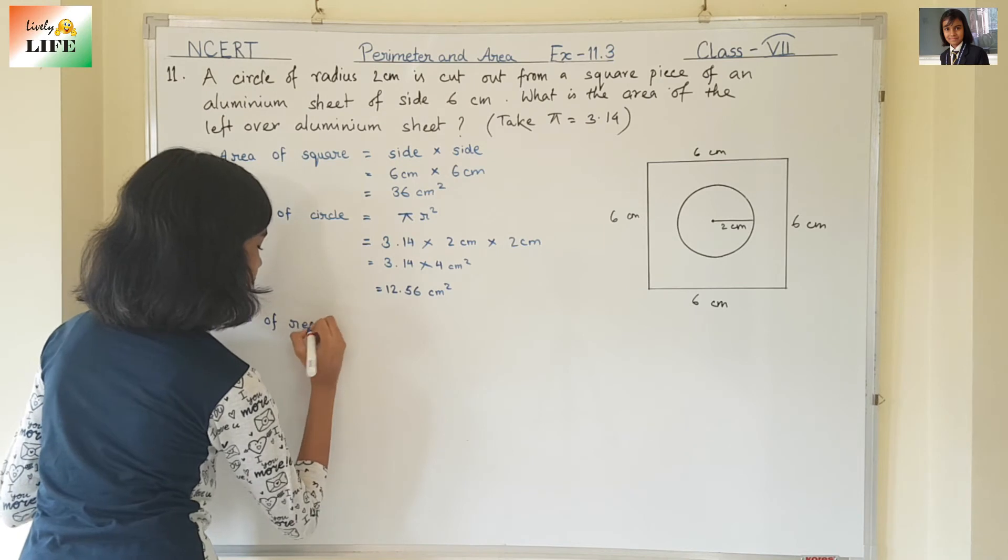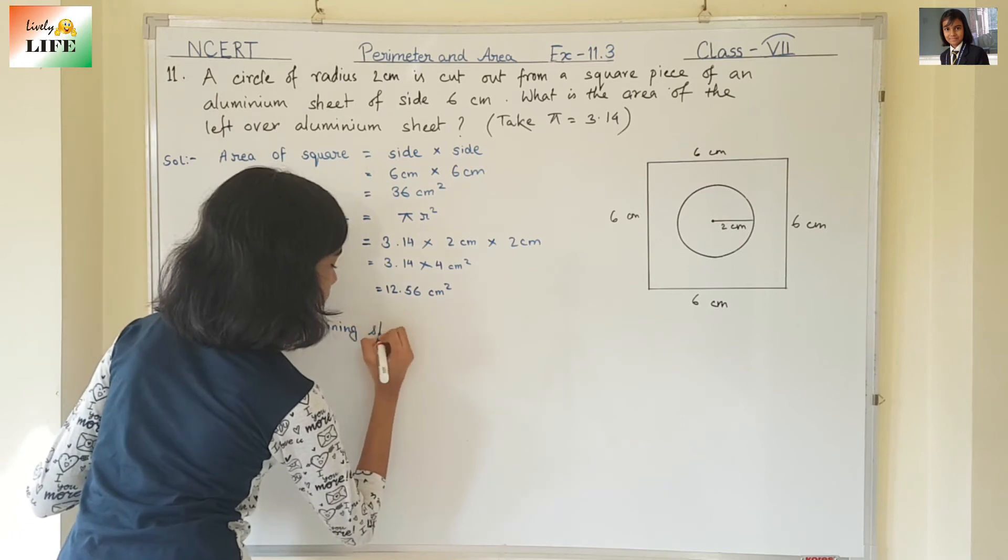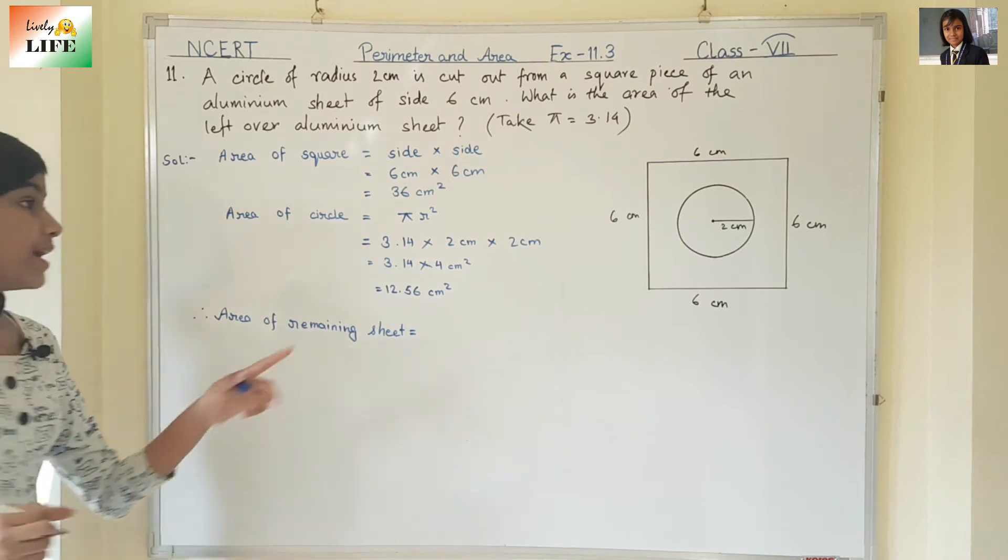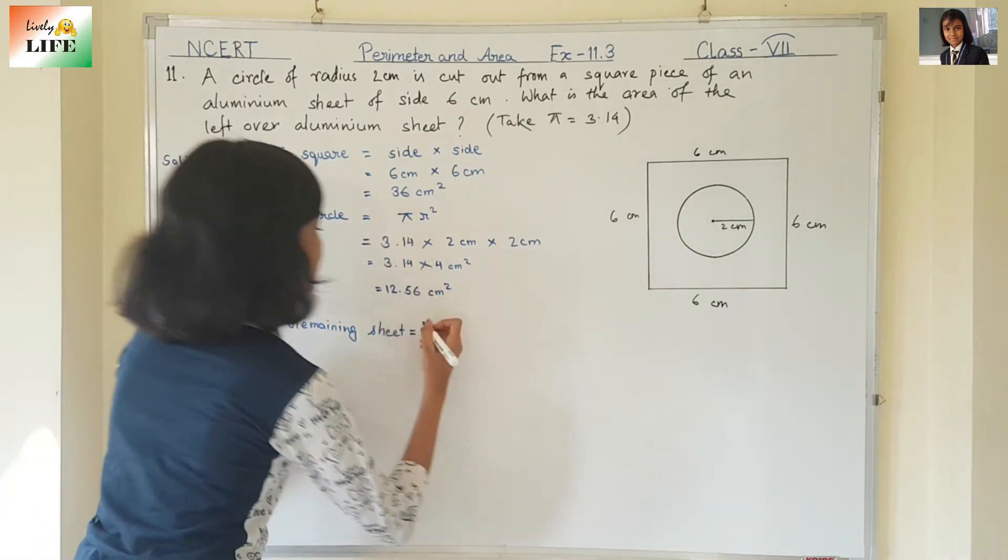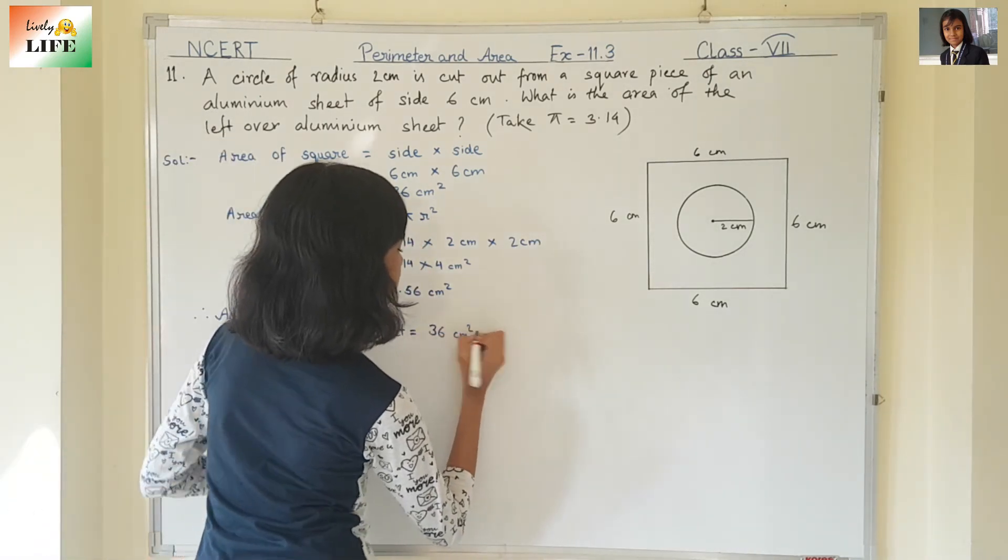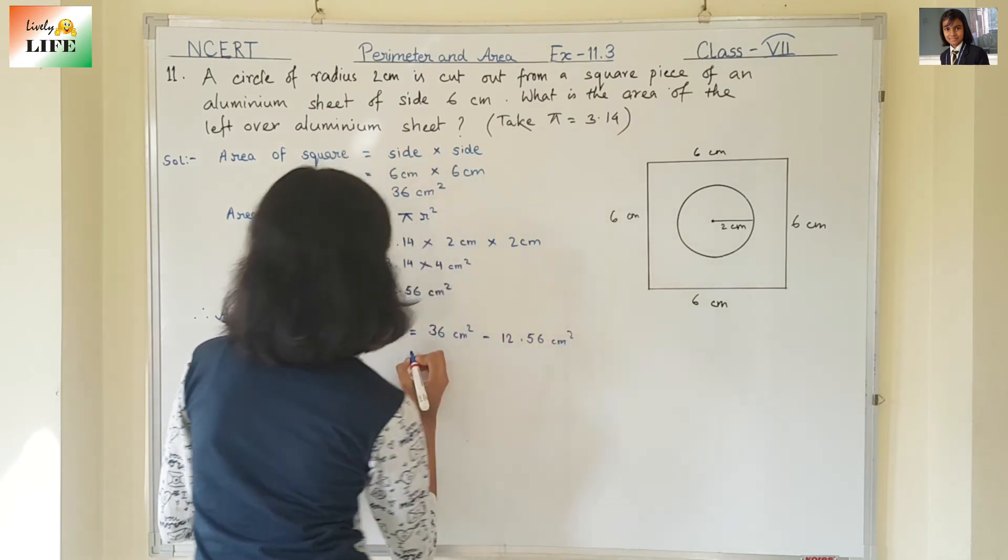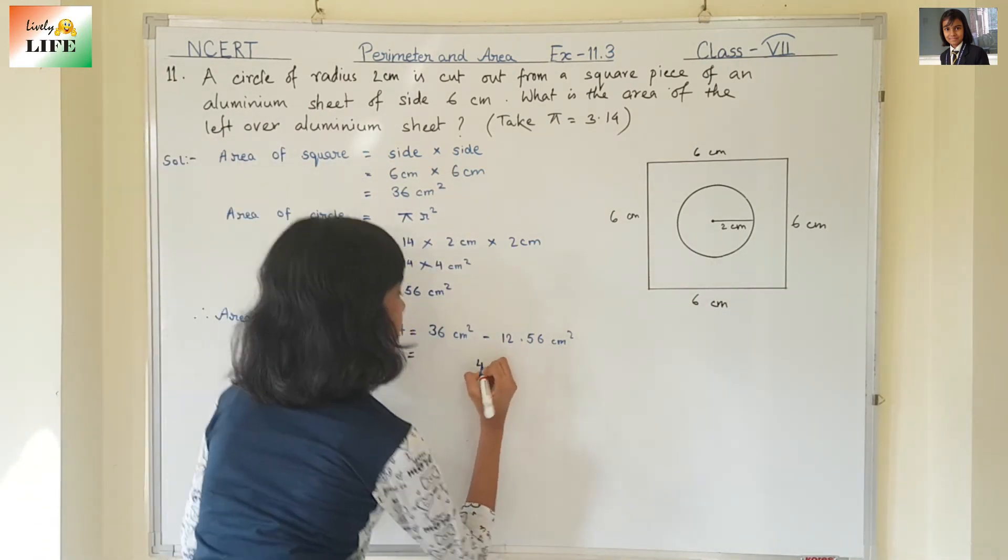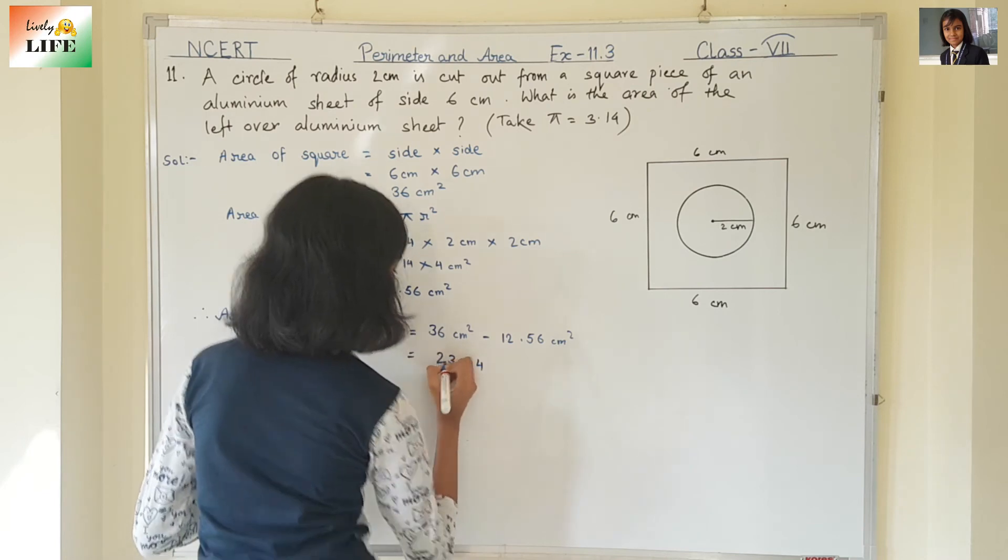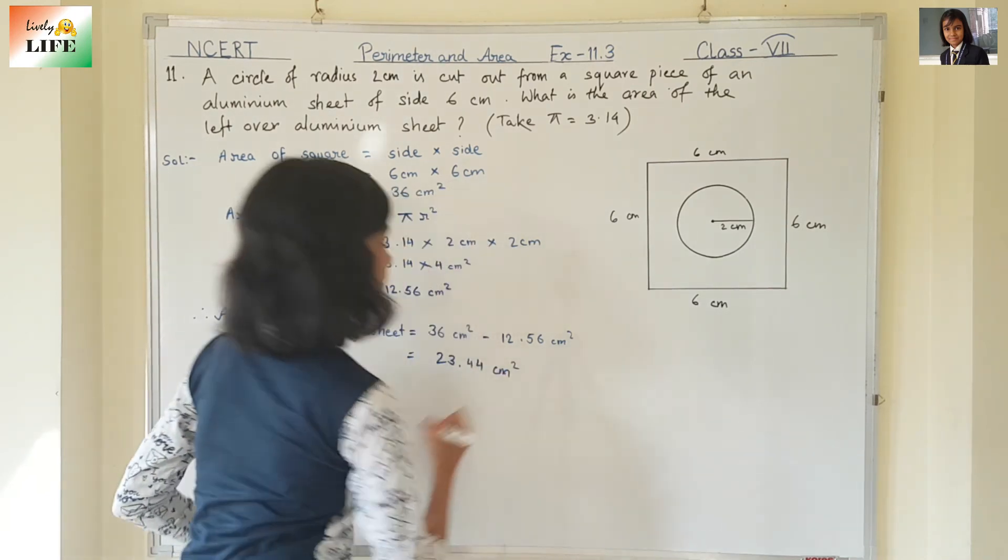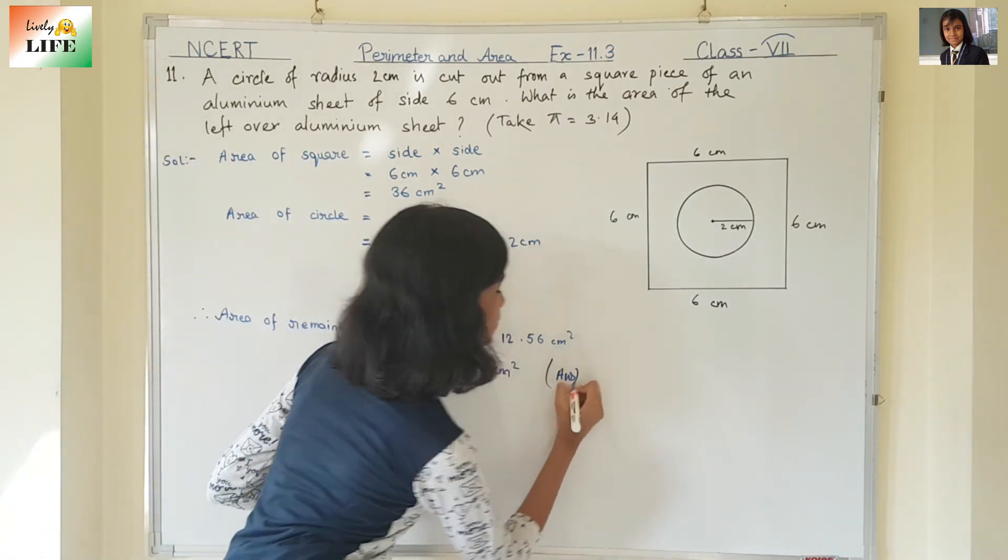Remaining sheet will be area of the square minus area of the circle. Area of the square is 36 cm square. Area of the circle is 12.56 cm square. So, 23.44 cm square. This is the area of the remaining sheet answer.